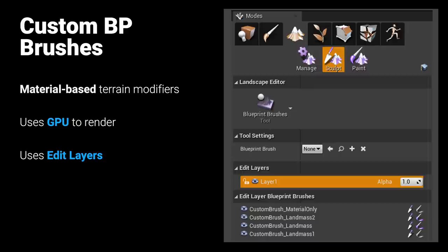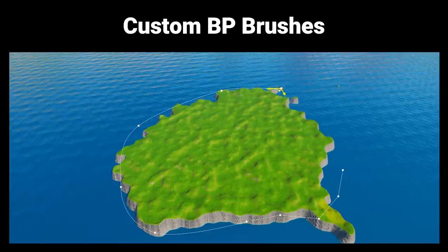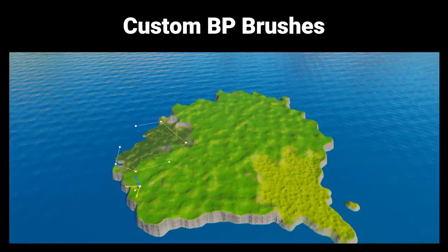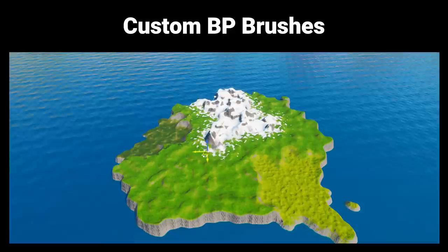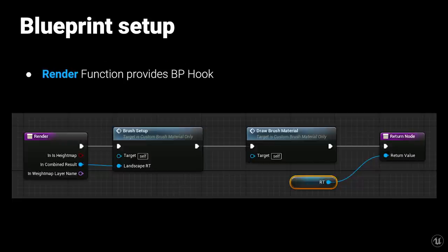Brushes in the world show up in the list under edit layer blueprint brushes. An experimental plugin called Landmass offers flexible example brushes, but you can also derive from the parent C++ class — landscape blueprint brush — to make a custom brush from scratch. The image shows the default brush types included in the Landmass plugin. Custom brushes allow flexible effects: use shapes to define biomes and manipulate terrain in various ways. Both height maps and weight maps can be modified, and brushes can be defined from splines to static meshes as inputs.